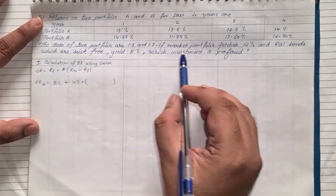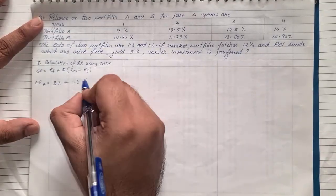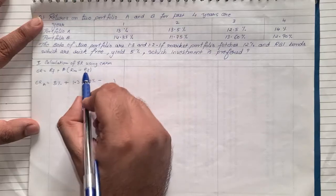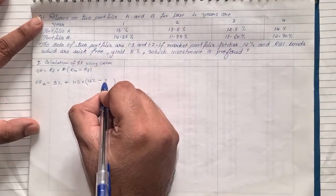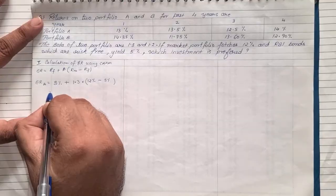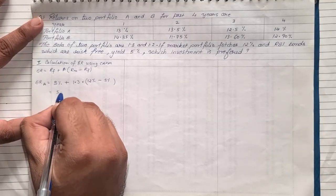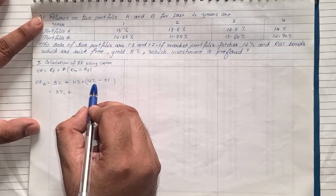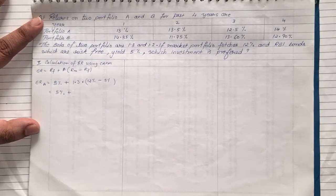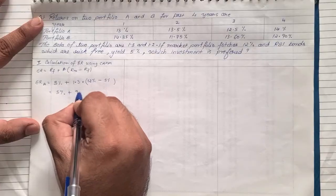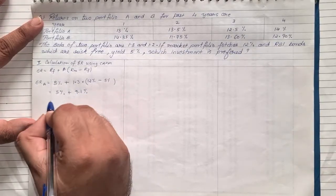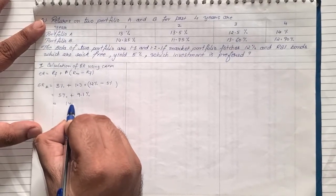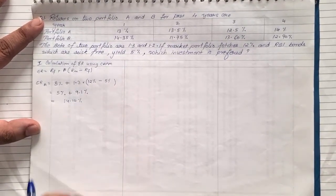The market return is given as 12 percent, minus the risk-free return of five percent. Solving this: five percent plus (12 minus 5 = 7), and 1.3 multiplied by 7 gives 9.1 percent. Adding these up gives the expected return of portfolio A as 14.10 percent.